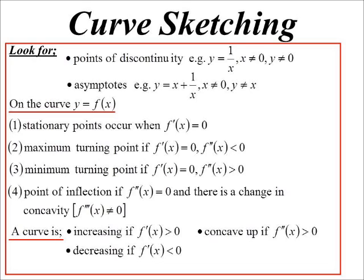And now we've seen about concavity as well. So if the second derivative is greater than zero, we know the curve's going to be shaped concave up. Otherwise, concave down, if it's less than zero.